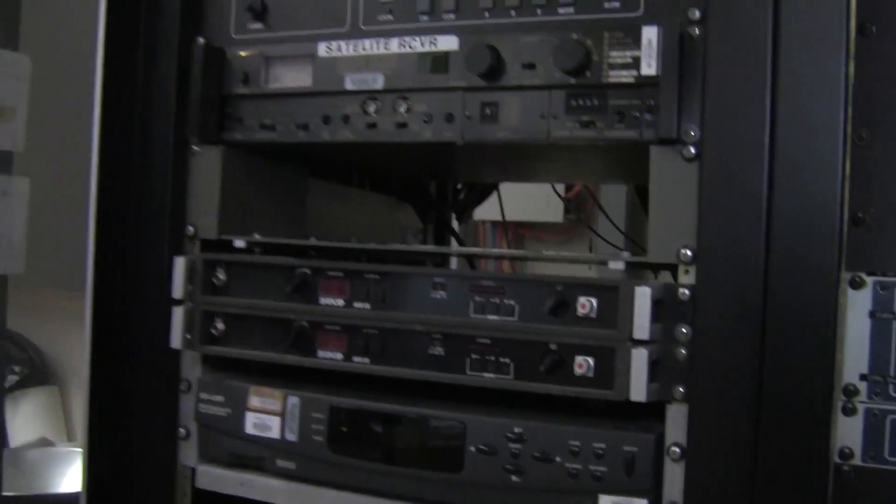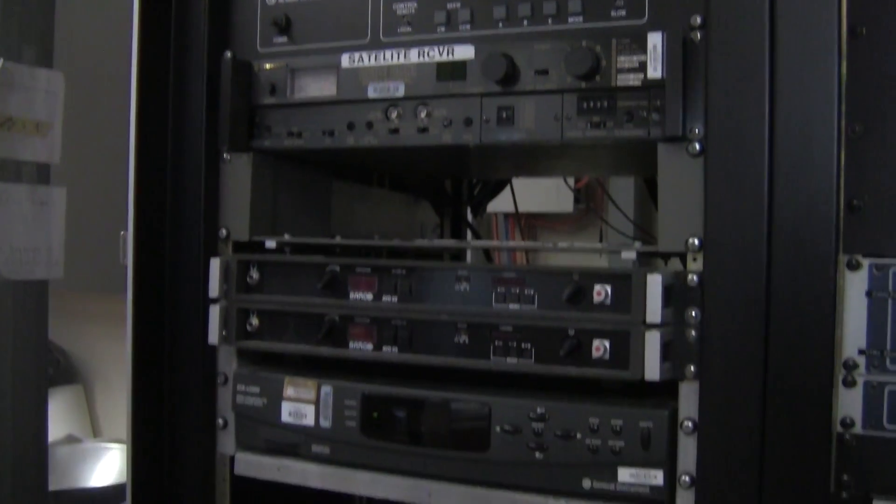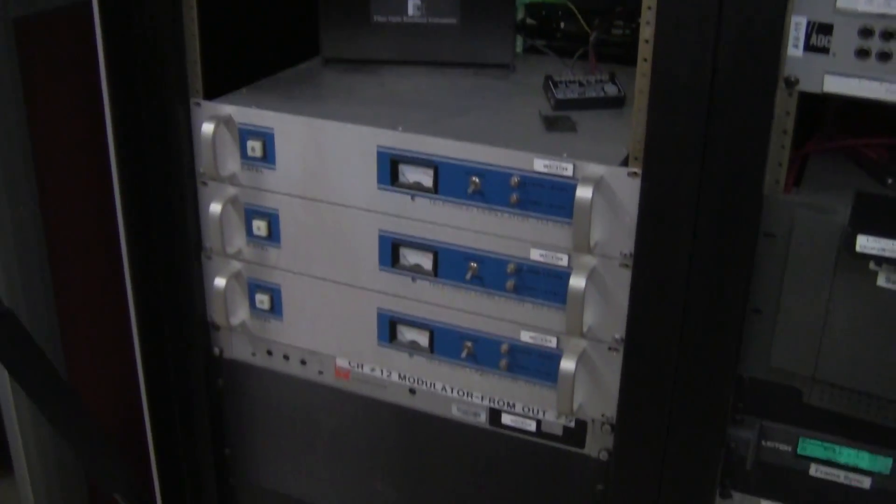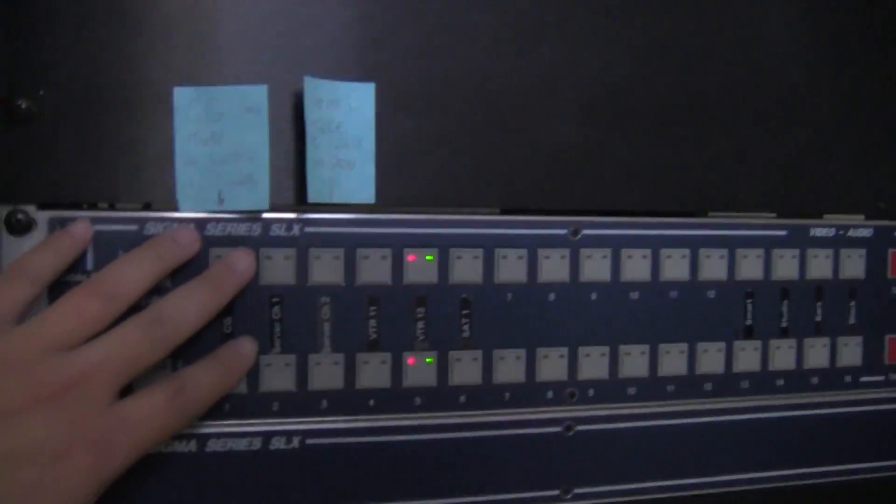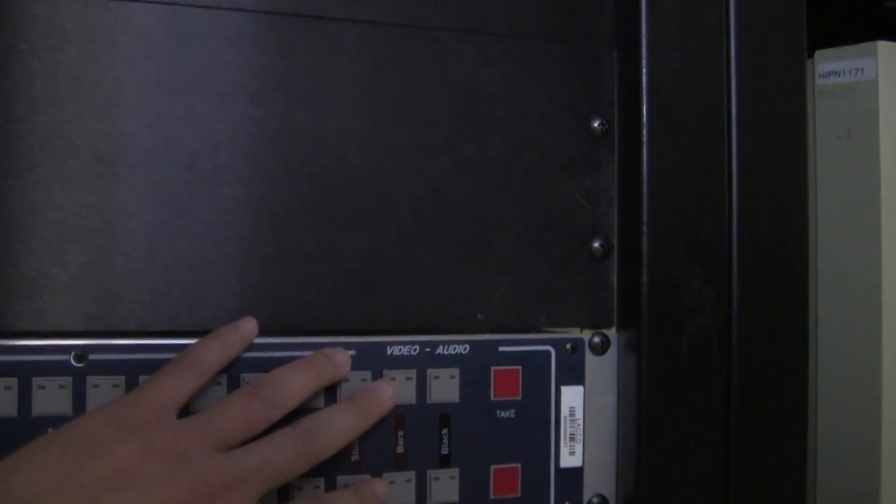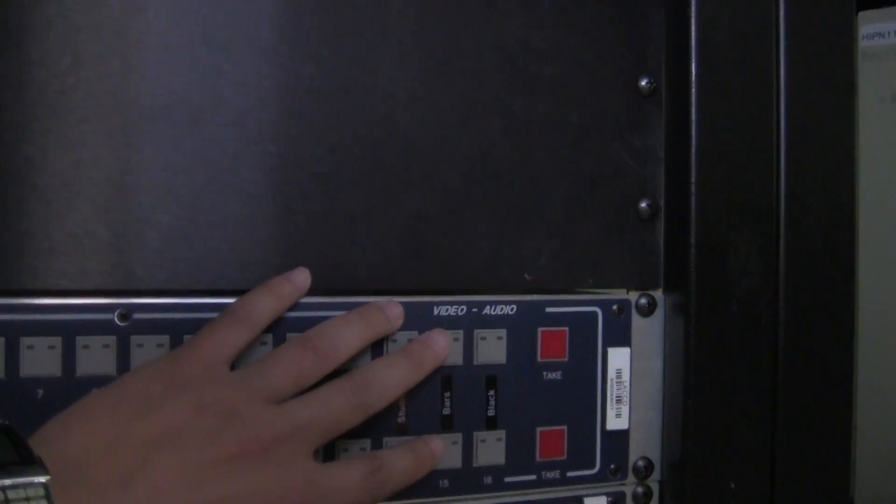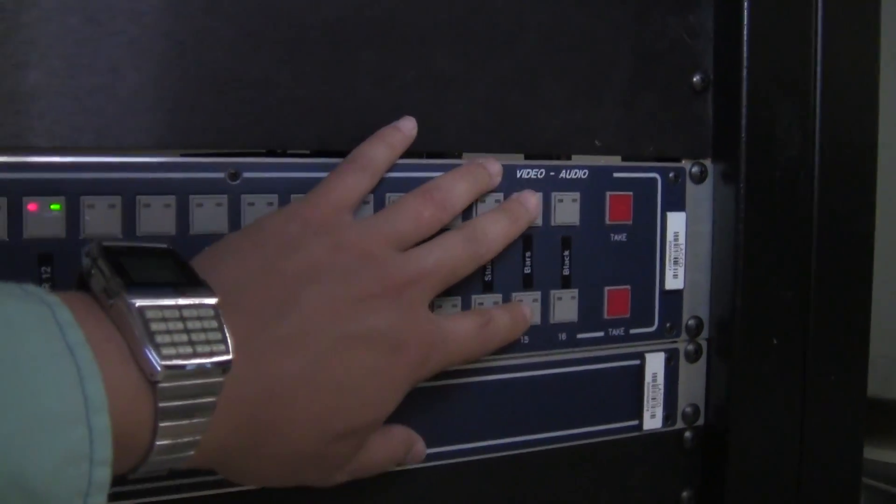We also have satellite which isn't operational anymore and that's also very expensive equipment. So we have here the switcher that switches different sources. And then we can also do the color bars to switch this to have a test pattern type of display to come out.